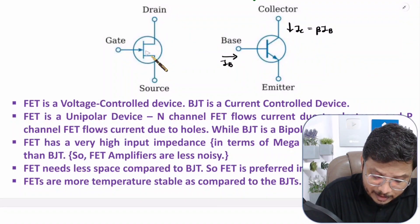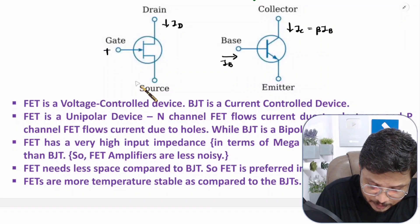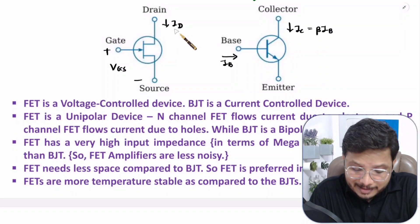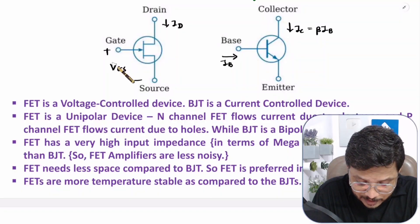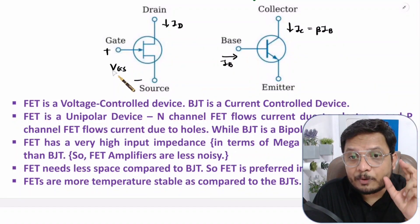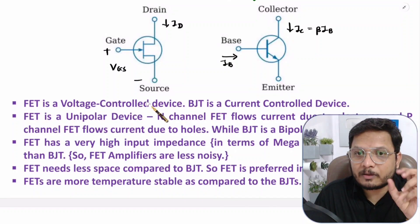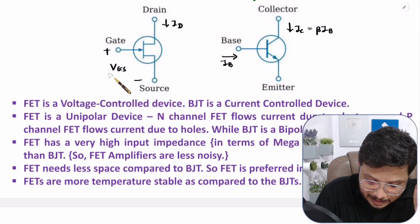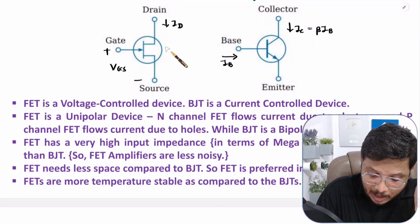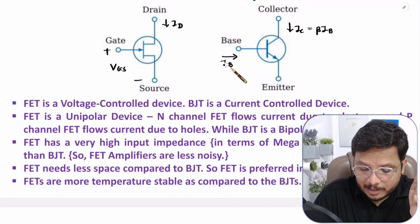When it comes to FET, the output current is the drain current ID. Between gate and source, we apply voltage VGS. This drain current ID is controlled by the input voltage VGS. So if you want to increase drain current, you increase VGS voltage. That is why FET is a voltage control device — output current is controlled by input voltage.